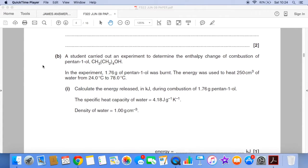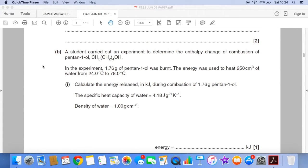Part B is a calculation and it takes you through it step by step. It's based around the combustion of pentan-1-ol. So we're told how many grams of pentan-1-ol is burnt and that it's used to heat up 250 cm cubed of water from 24 Celsius to 78.